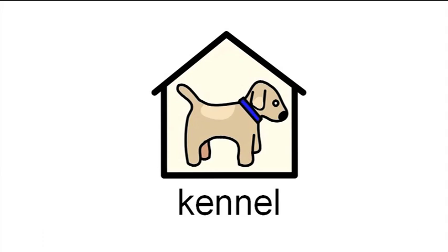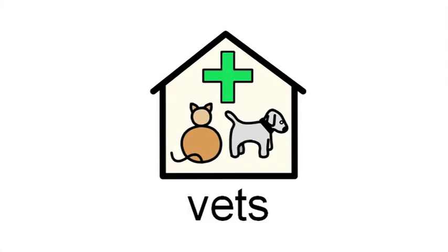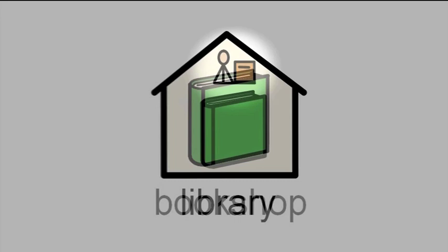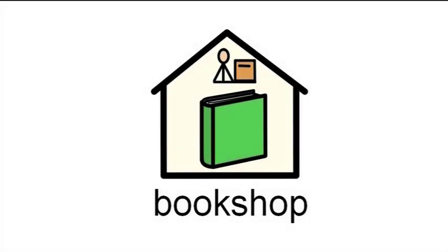The inclusion of other elements within a building symbol can change the nature of the symbol and the concept again. For example, adding a cash register to the book in a building symbol would indicate a bookshop rather than a library.